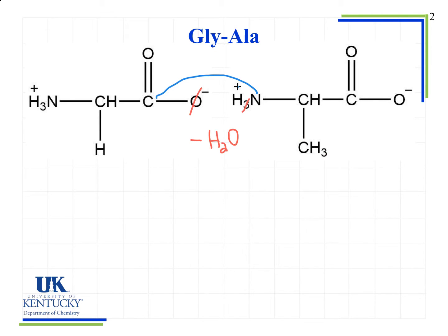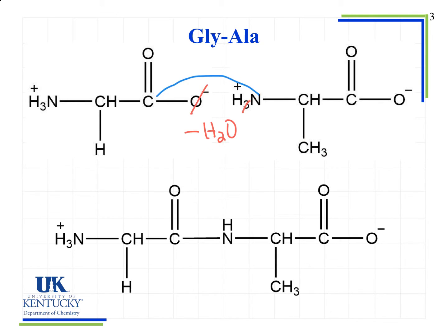When we lose this water molecule we also lose the charge because it's neutralized. The new bond forms from the carbon of the carbonyl group to the nitrogen on the other amino acid. Notice that nothing else in the structure changed — we started with NH3 on the left, we have CH with another hydrogen attached, a carbonyl group, then NH with one hydrogen left, then CH with a CH3, then a carbonyl, and then our O minus. The only thing that changed was we lost our water molecule and formed that new bond.